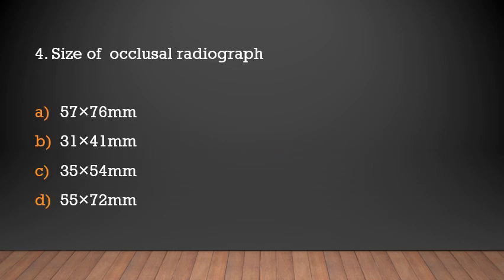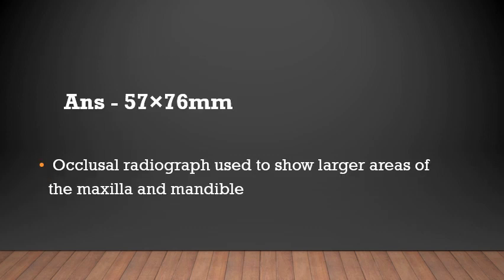What is the size of the occlusal radiograph? Options: 57×76 mm, 31×41 mm, 35×54 mm, or 55×72 mm. The answer is 57×76 mm. The occlusal radiograph is used to show larger areas of the maxilla and mandible.